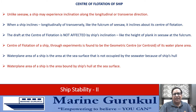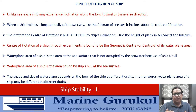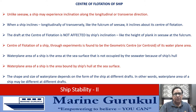The water plane area is the area bounded by the ship's hull at the surface of the sea. Its shape and size depend on the form of the ship, so it varies from ship to ship. For the same ship, the water plane area may also differ at different drafts.